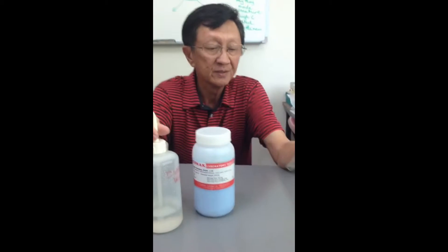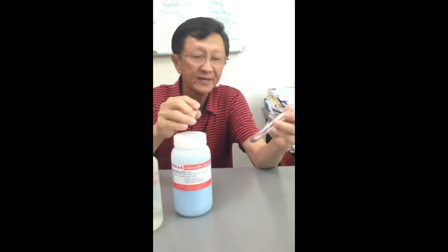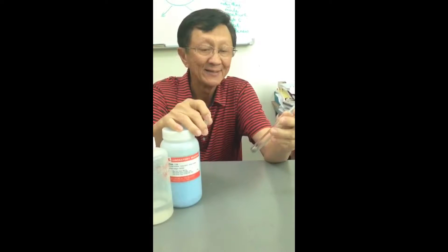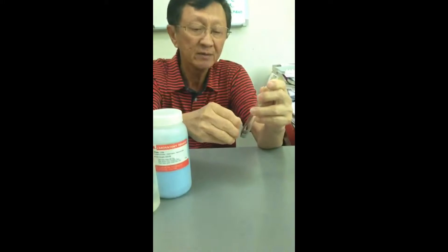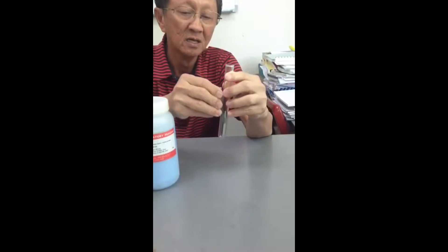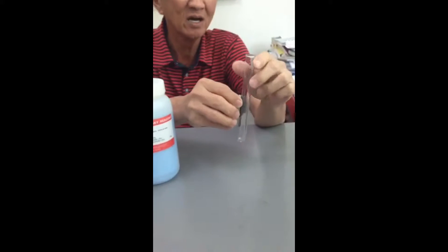Now what I have here is iron filings. And iron filings are magnetic right now. Can you see? Iron filings are magnetic right now.